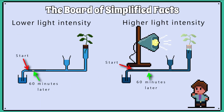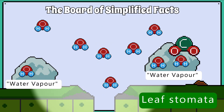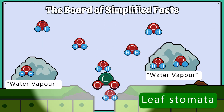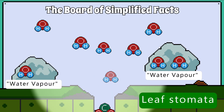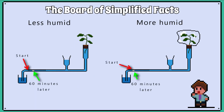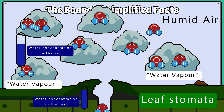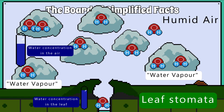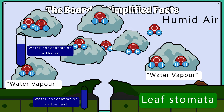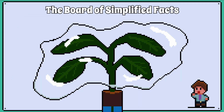Increased light intensity increases the rate of transpiration because it causes the leaf to open the stomata wider to maximise photosynthesis by increasing the uptake of carbon dioxide. This, however, also increases the rate of water loss through the stomata. Higher humidity reduces the rate of transpiration because the concentration gradient of water inside and outside the stomata is less steep in humid conditions, meaning the rate of diffusion of water out of the leaf is lower. In a lab, this can be achieved by placing a clear plastic bag over the leaf to trap the water leaving the leaf and increase the local humidity.